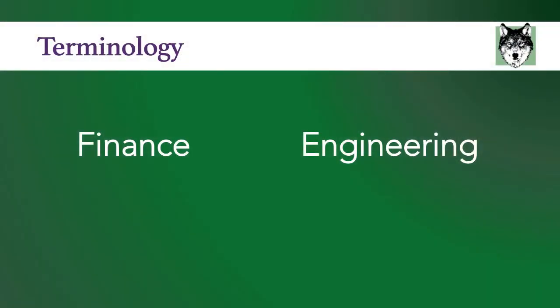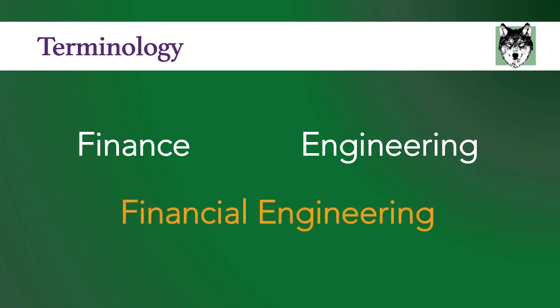Before we jump into these examples, I want to start by talking about the term financial engineering. This is obviously somebody who came along and decided to take the word finance and take the word engineering and smoosh them together to create financial engineering. The idea here is that finance professionals can approach designing a business with the same tools, the same advanced mathematics, and the same rigor that an engineer uses when designing a machine. This is not an exact pairing of words because businesses are full of people, and people are not the same thing as parts used in a machine.